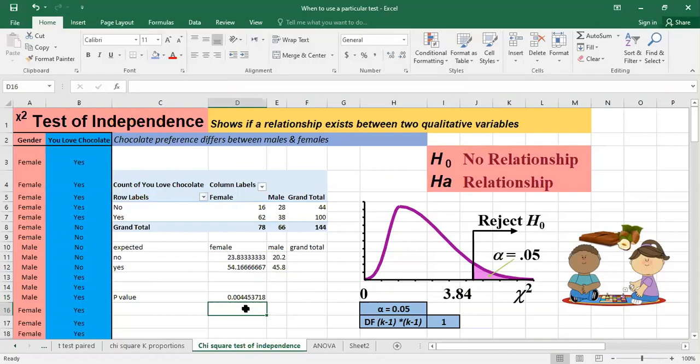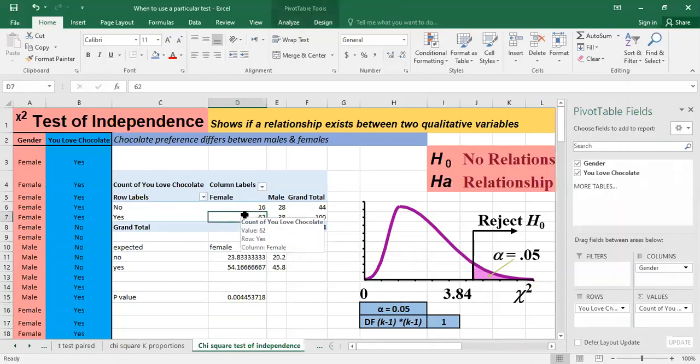So it's too small and it's less than alpha. So this is why it will fall somewhere in the rejection zone. So we have to reject the null hypothesis, which means that there is a relationship between the gender and the chocolate preference.